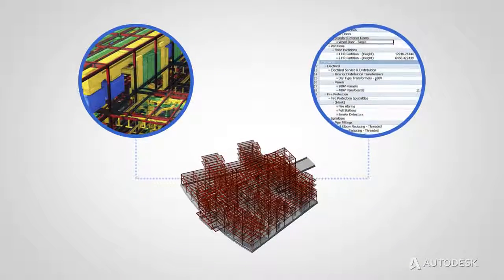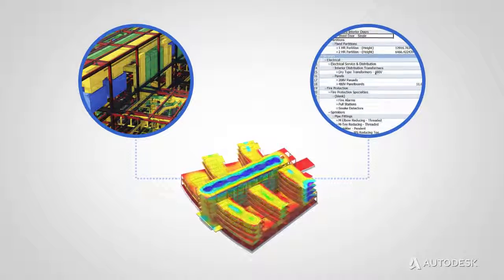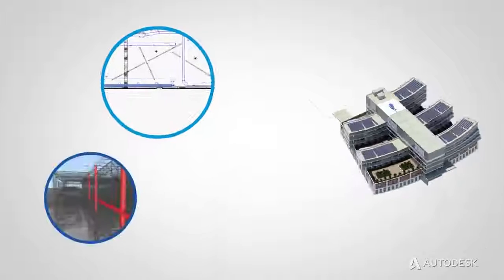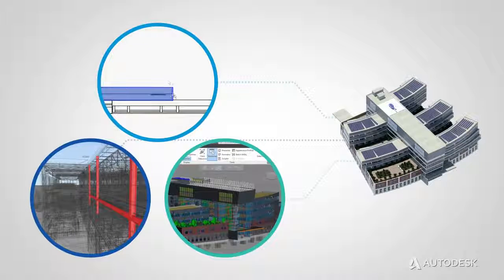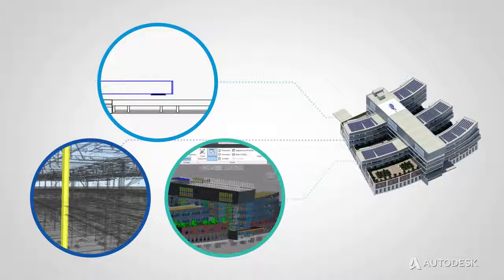BIM creates more than just digital 2D or 3D models. BIM models use objects that have intelligence, geometry, and data. If a model element is changed, BIM software coordinates the change in all views that display that element, because they are all views of the same underlying information.